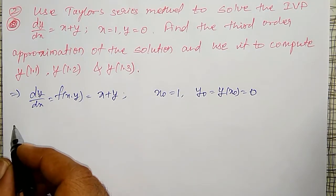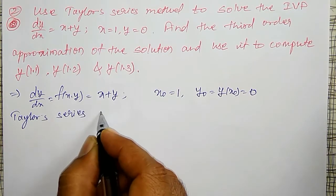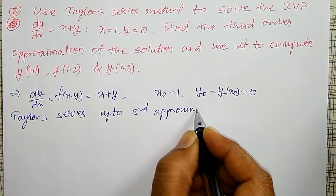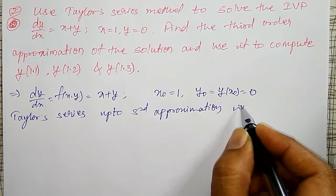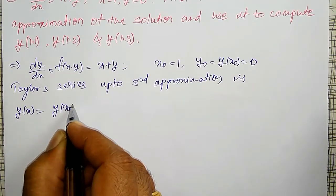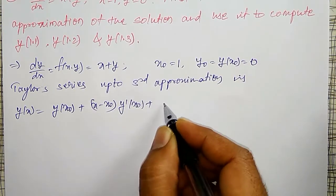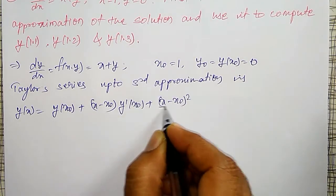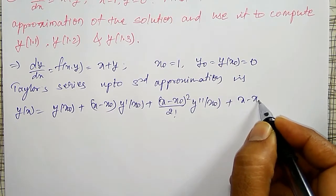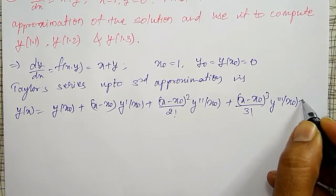Now, Taylor series up to third approximation is given by y(x) = y(x₀) + (x - x₀)y'(x₀) + (x - x₀)²/2! y''(x₀) + (x - x₀)³/3! y'''(x₀) + so on.